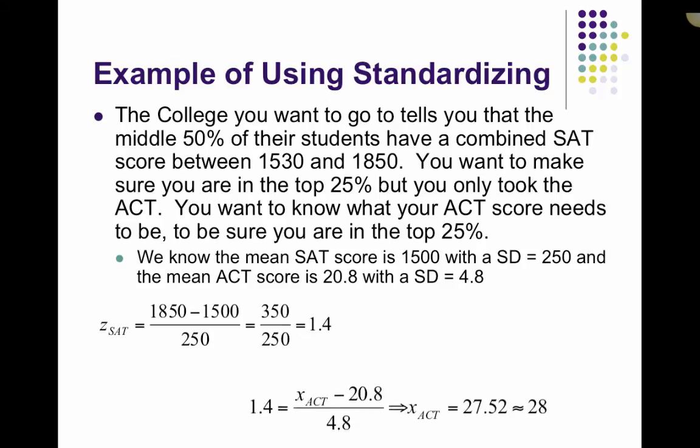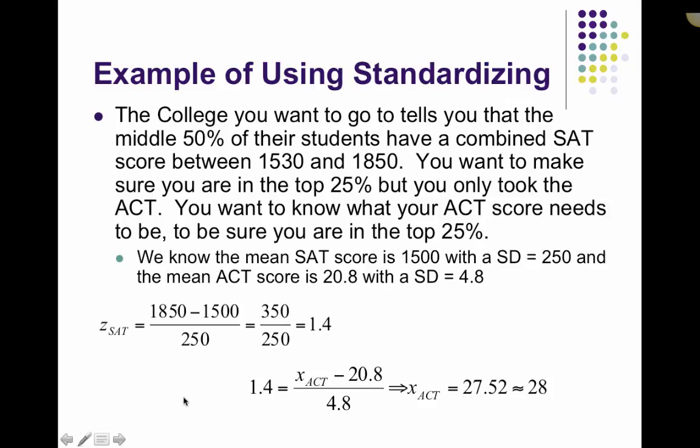So doing that, we have that, so again, we want to be 1.4 standard deviations above the mean, so that's our z-score. We're trying to calculate the observed score that we would need to get. We subtract the known mean and divide by the standard deviation. And then using algebra, I know you have to use algebra, we can multiply by 4.8 and then add 20.8. And we get that our ACT score has to be 27.52.